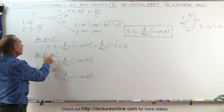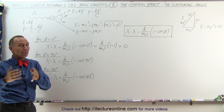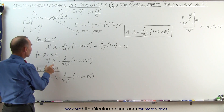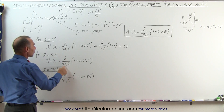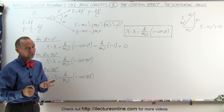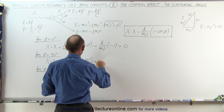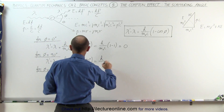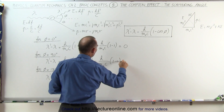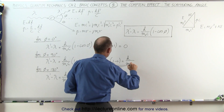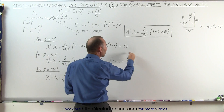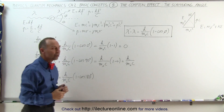If the scattering angle was measured to be 90 degrees — and of course it can be anywhere between zero and 90 degrees — then the change in the wavelength is equal to h over m-naught c times one minus the cosine of 90 degrees. The cosine of 90 degrees is zero, which means this equals h divided by m-naught c times one minus zero, or simply h divided by m-naught c.